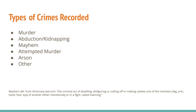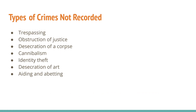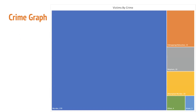The types of crimes I didn't record were trespassing, obstruction of justice, desecration, animalism, identity theft, desecration of art, and aiding and abetting. This is my graph of the crimes. As you can see, it's mostly murder — murder makes up about 81% of the crimes, and then there's some kidnapping, a little mayhem, a little attempted murder, and a little bit of arson.